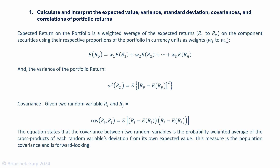The expected return on the portfolio is a weighted average of expected returns on the component securities. You calculate the expected return on each of the components of the portfolio and then take the weighted average of those expected returns. So if we have assets R1 to Rn with weights W1 to Wn, you take the weighted average of their expected values — that gives you the expected return of the portfolio.